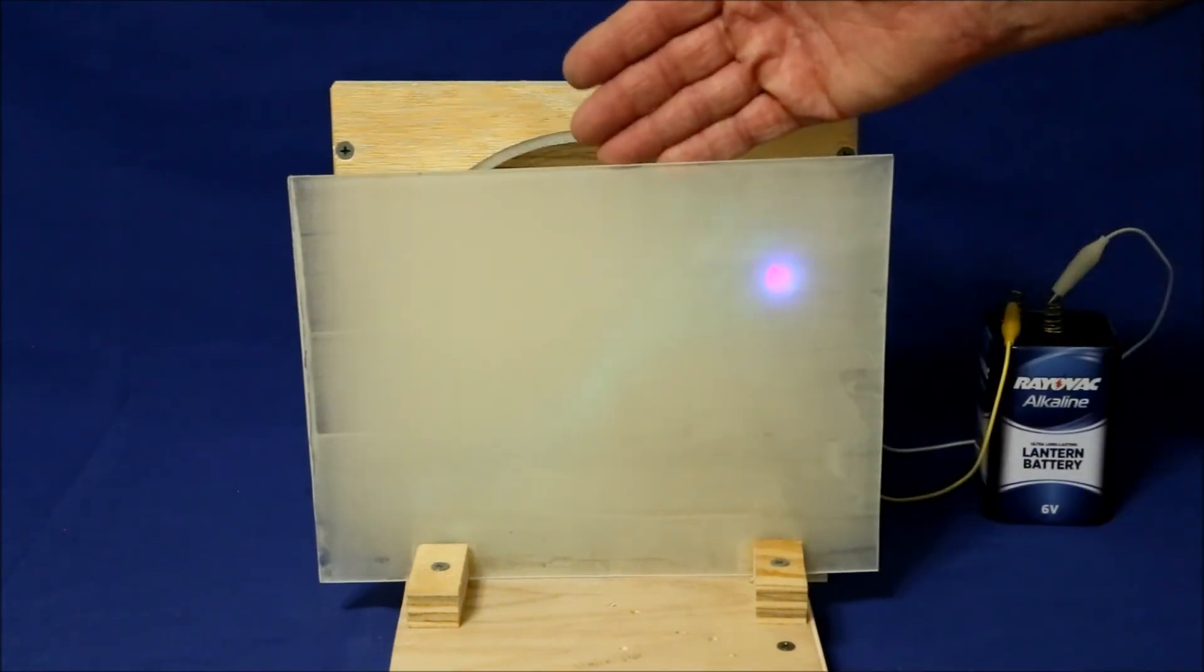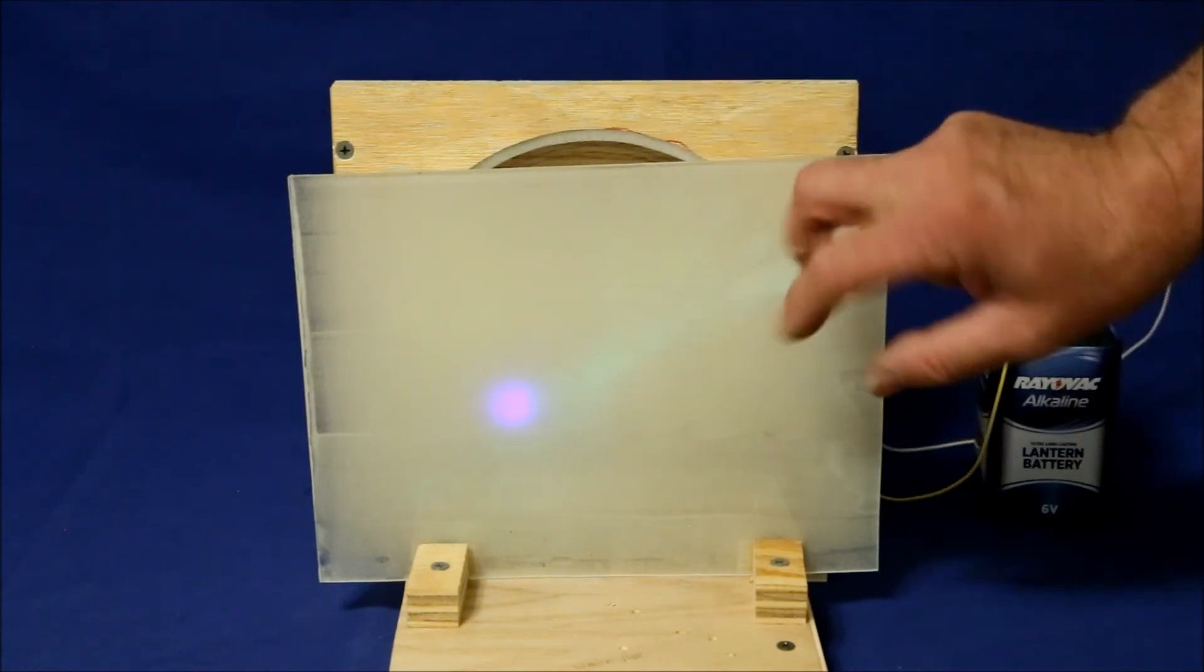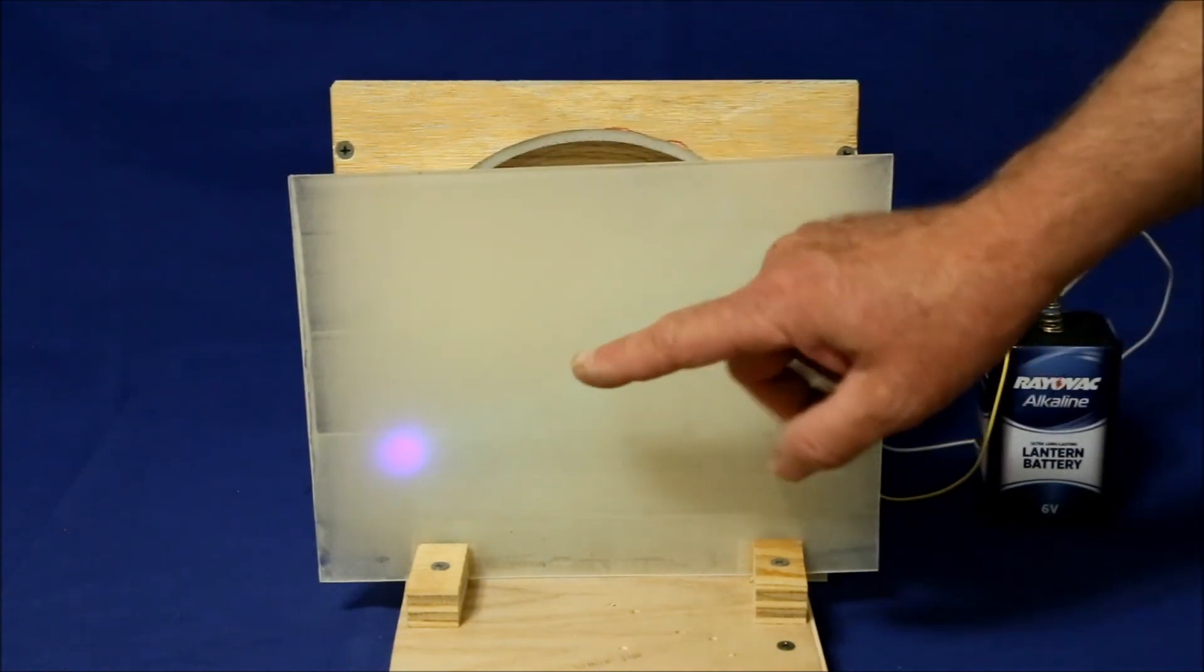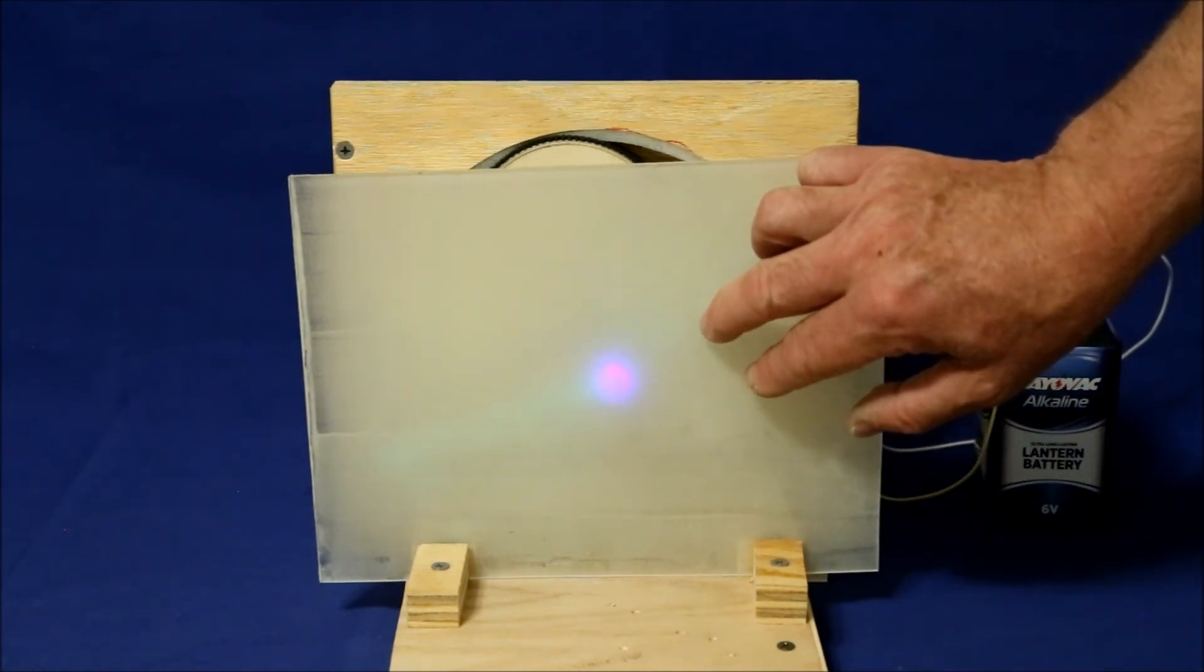By moving the plexiglass closer or further away from the light you can control the thickness of the line. Though the further away it is and the thicker the line is, the fainter the line is going to be.